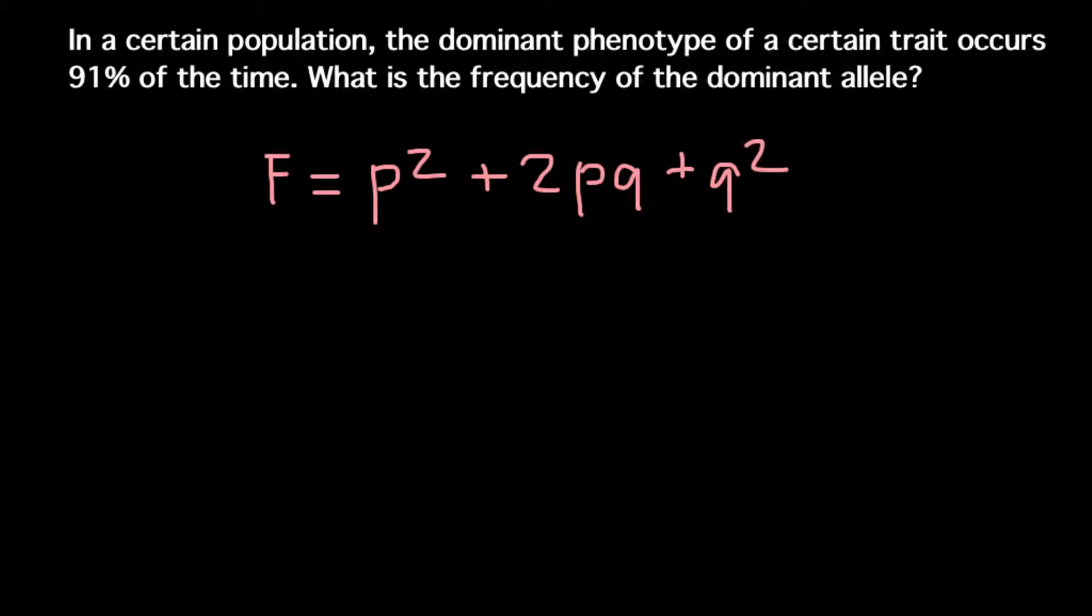All of this equals 1. So all the alleles p plus all the alleles q would equal to 1, and 1 in this scale would equal to 100%. All the dominant alleles p plus all the recessive alleles q, if we combine them all together, we should get 100%.